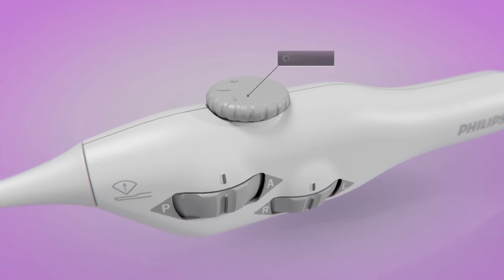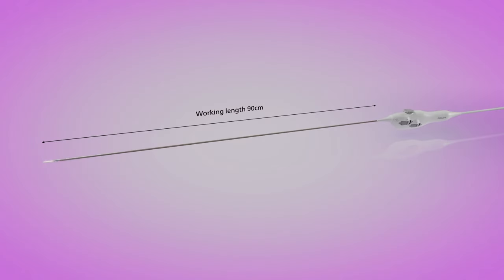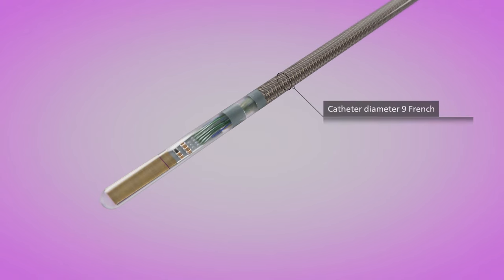The clutch knob provides variable tension to the flex wheels or can be fully engaged as a steering lock. The 90 cm working length supports access from the right or left groin and the 9 French catheter size requires only a 10 French sheath.